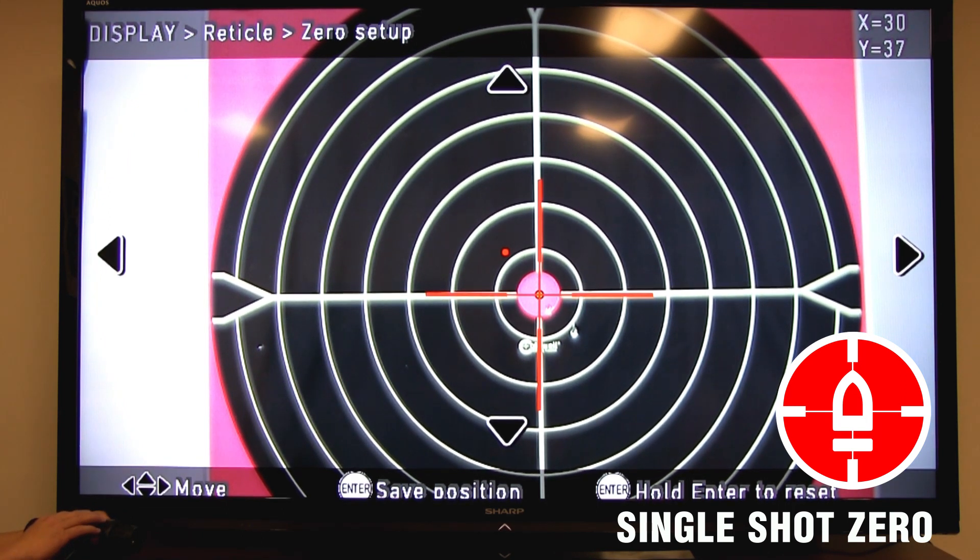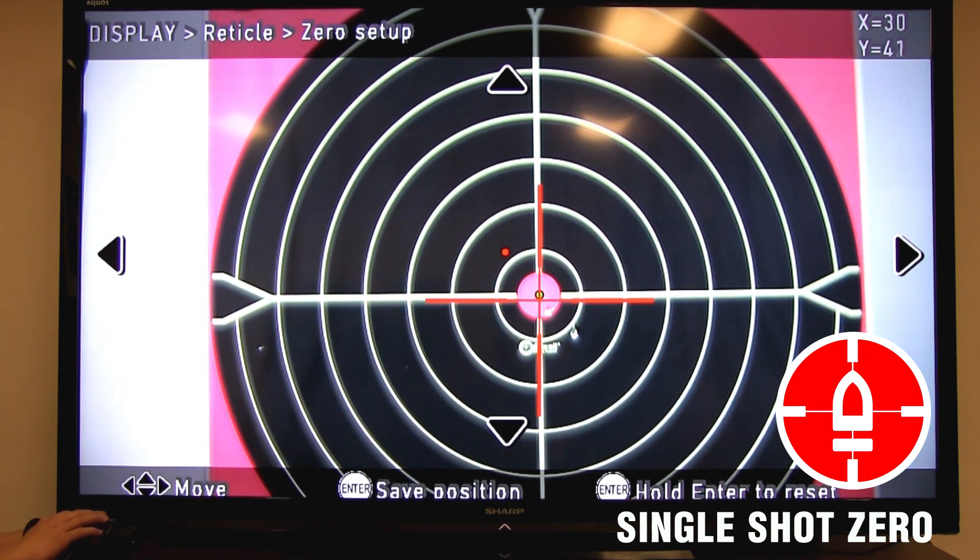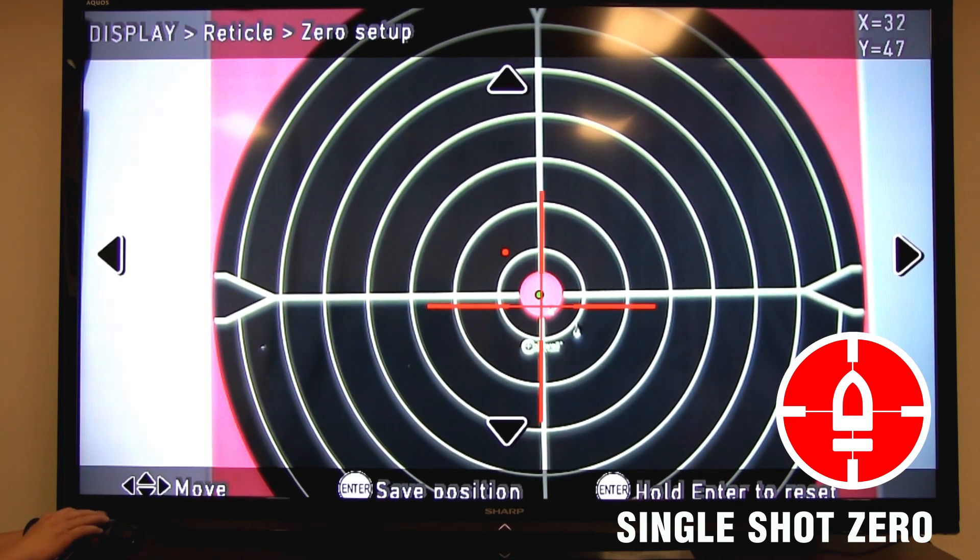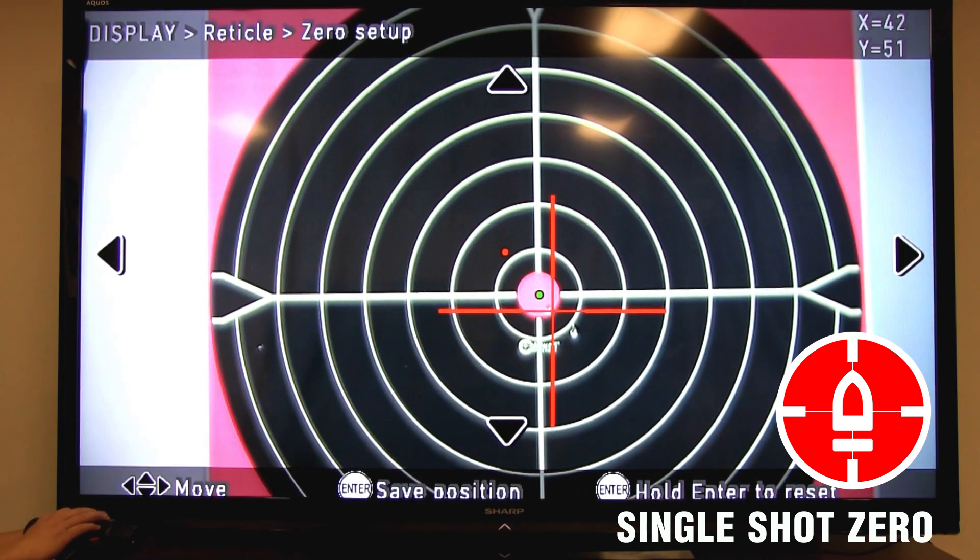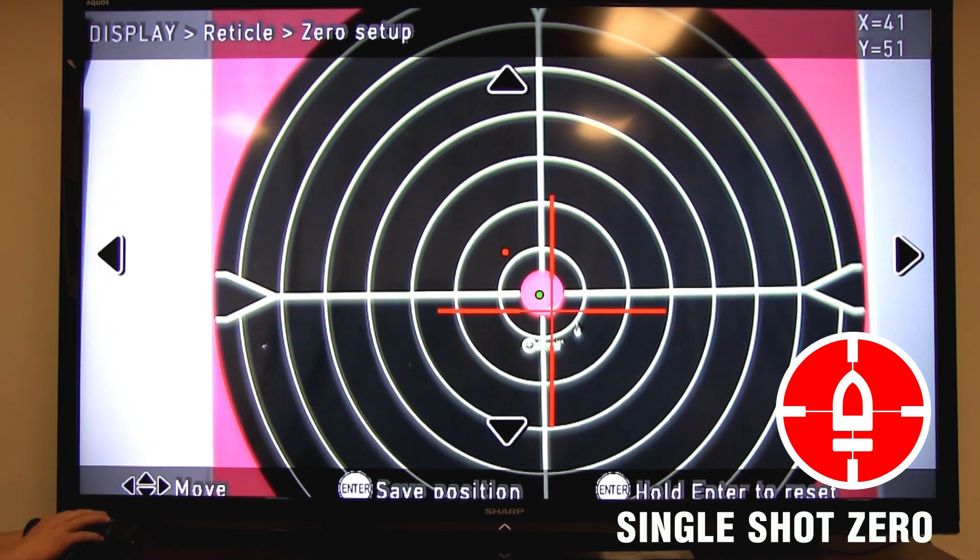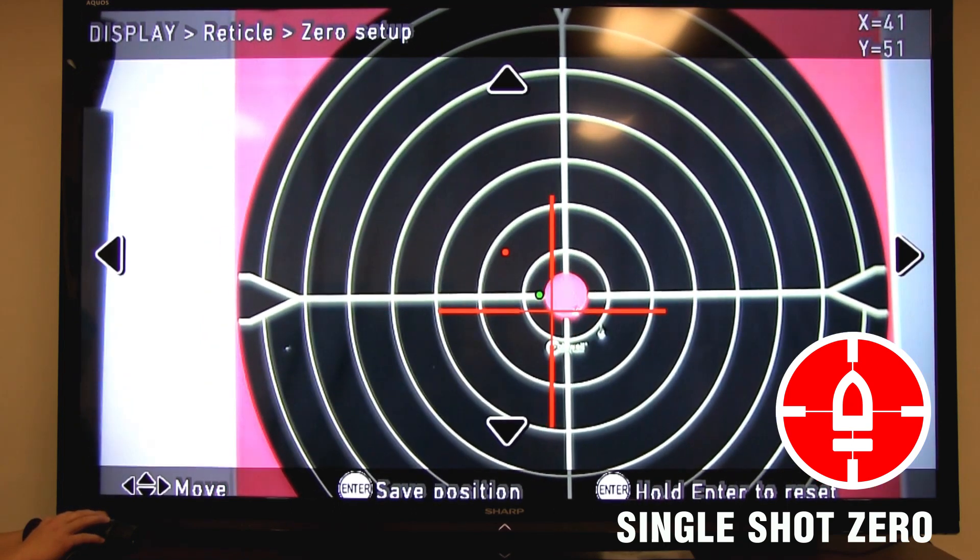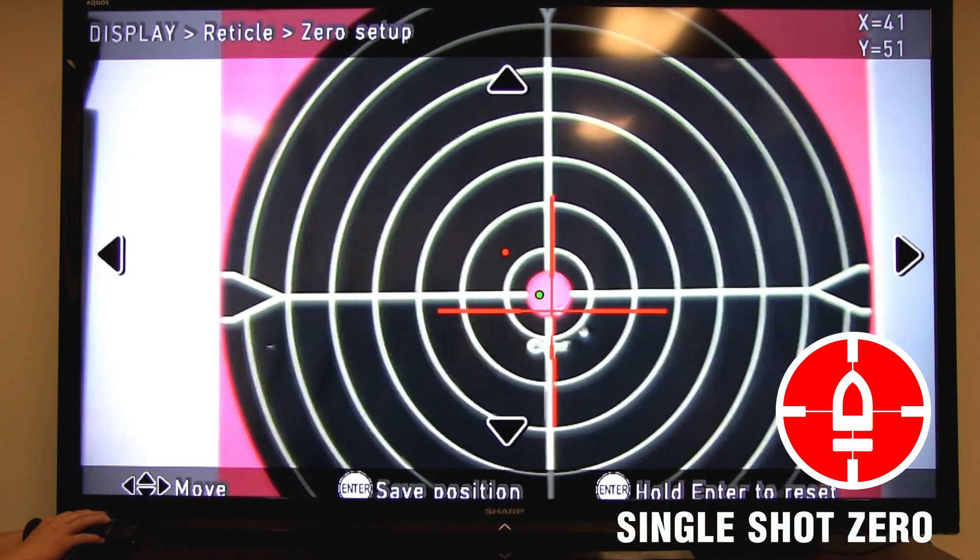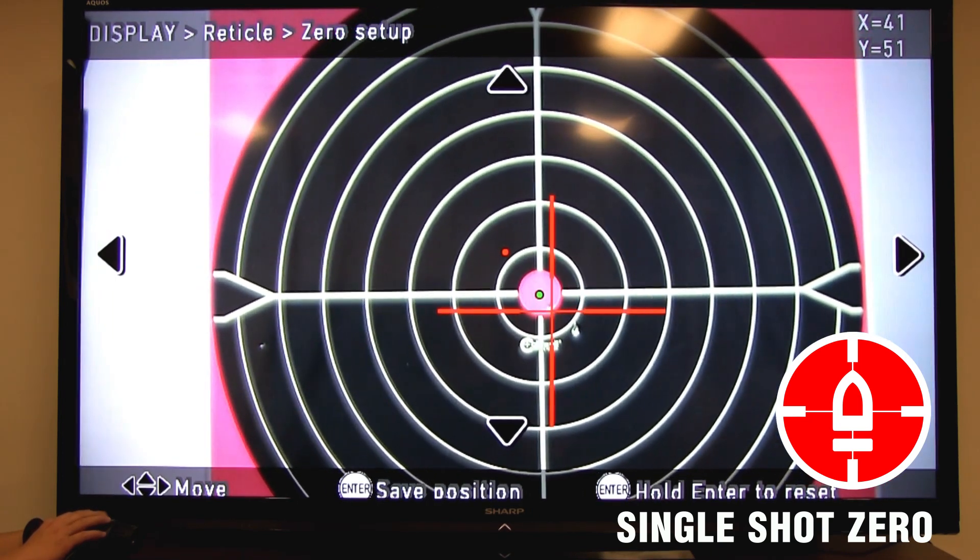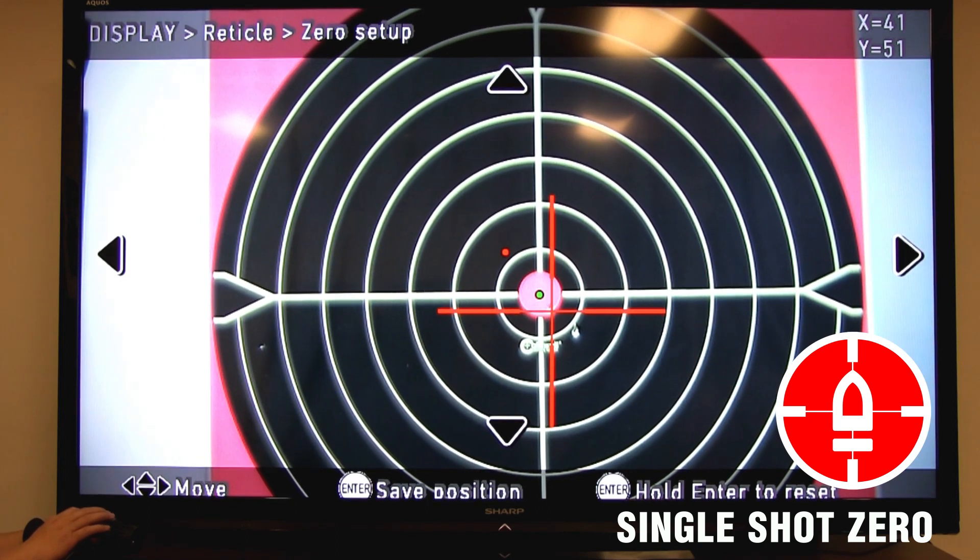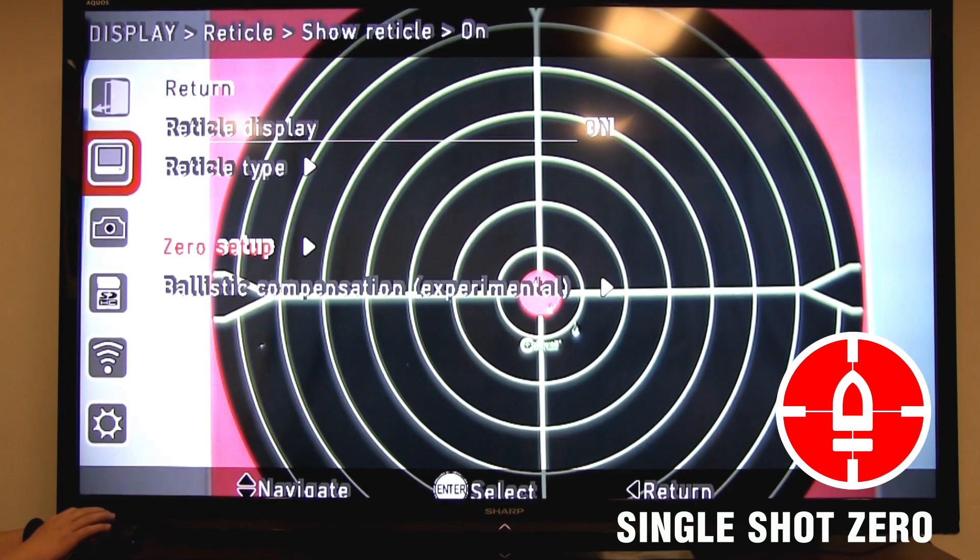So repeat the exact same steps that you did the first time around by moving that reticle to that bullet hole while keeping the green dot on your original point of aim. Now once you've done that, you press enter, and your zero is saved.